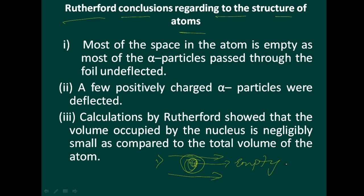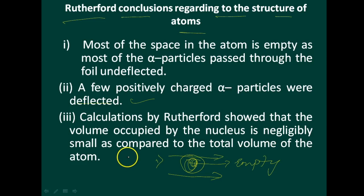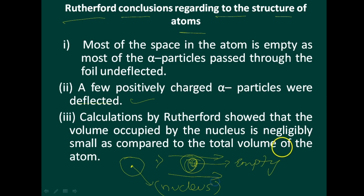Next, a few positively charged alpha particles are deflected — some of the alpha particles are deflected. Calculations by Rutherford showed that the volume occupied by the nucleus is negligibly small as compared to the total volume of the atom. Consider this as an atom — the nucleus is present only at the center, and it is negligibly small compared to the total atom.